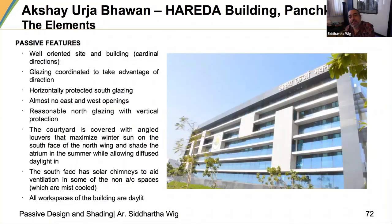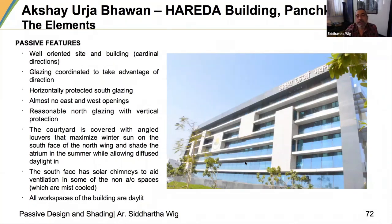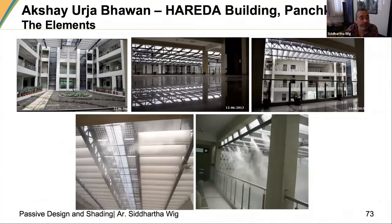Looking at the classic features: the orientation of the building, the glazing, the chajas and shades — designed for maintenance as well as to allow winter sun in while cutting summer sun off. There were almost no east or west openings. We used a reflective tile with a very high SRI on the roof, achieving a net temperature drop of nearly 13 to 15 degrees Celsius.